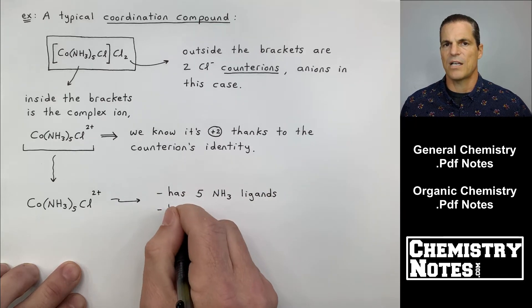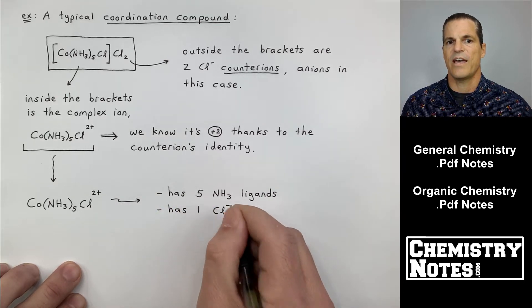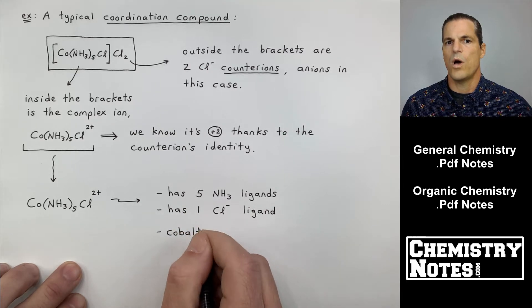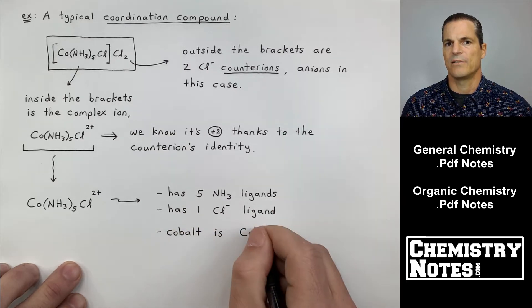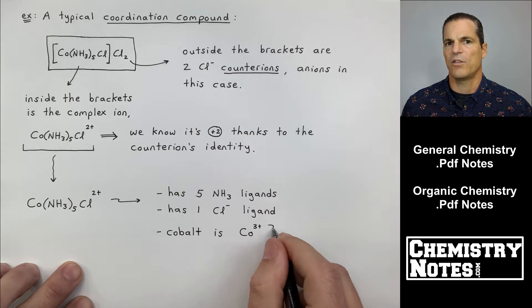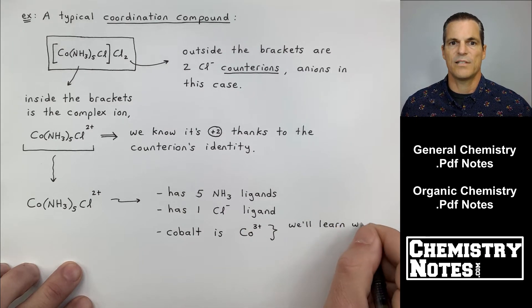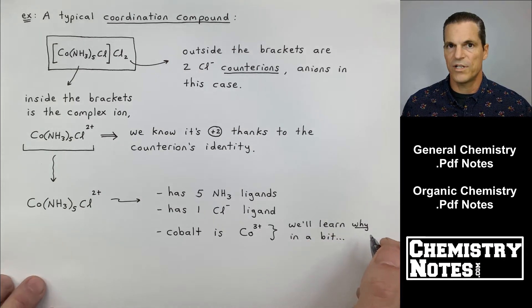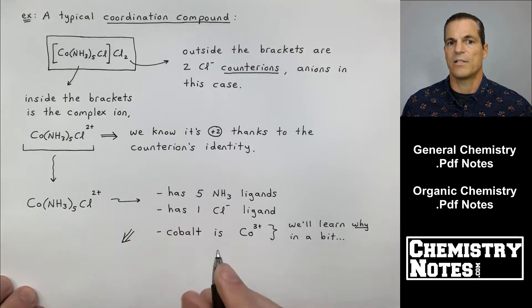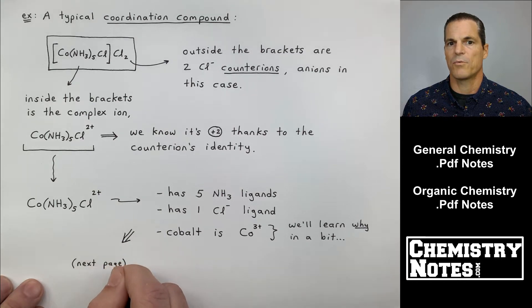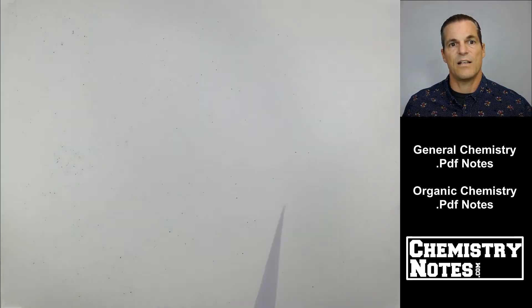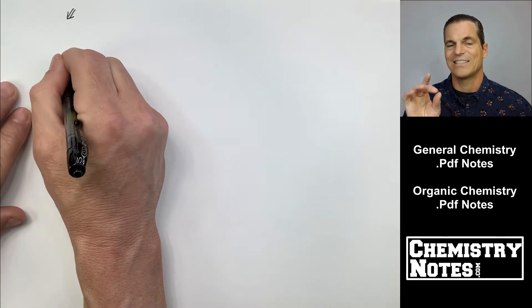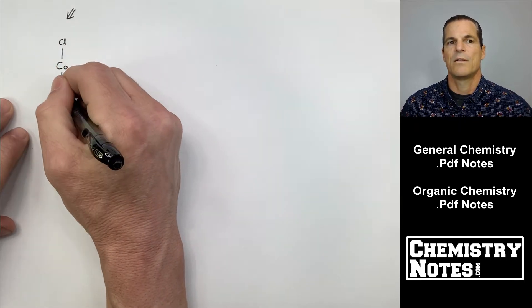Let's break that complex ion down a little bit. You can see I have five NH3 ligands and I have one Cl minus ligand. Now at this point, I'm just telling you that NH3 is a neutral ligand and Cl minus is a negative 1 ligand. If that's true, which it is, cobalt then must be a Co3 plus. Why is cobalt a 3 plus? Well, because the overall charge has to be a 2 plus and I've only got that one Cl minus ligand. So it all works itself out.